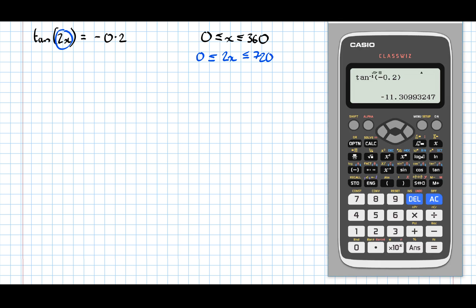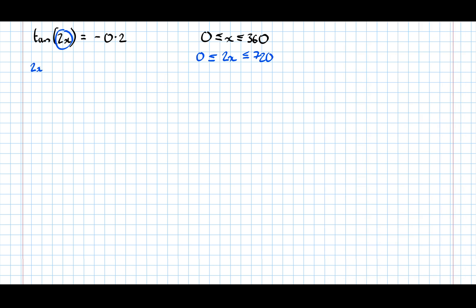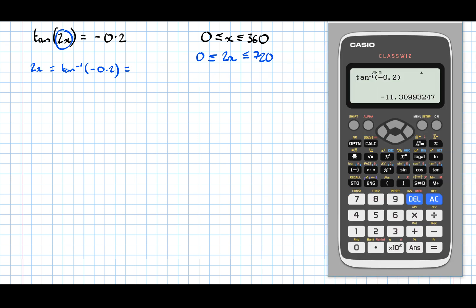As before, the first thing we've got to do is find the first solution on the calculator. So if we take inverse tan of both sides, we get 2x is equal to the inverse tan of minus 0.2, which is equal to minus 11.310.